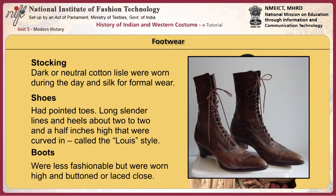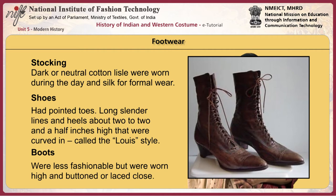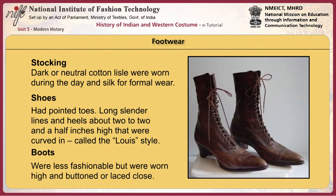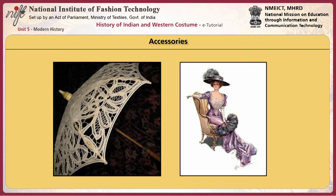For footwear, stockings of dark or neutral cotton lisle were often worn during the day, and silk for formal wear. Some were decorated with coloured clocks, designs knitted into the stockings, or lace insertions. Shoes had pointed toes, long slender lines, and heels about two to two-and-a-half inches high that curved in — called the Louis style. Boots were less fashionable but worn high and buttoned or laced. Accessories included large flat muffs, suede or leather daytime handbags or beaded evening bags, and decorative lace or silk parasols trimmed with fringe or lace. For evening, women carried long folding fans or ostrich fans.